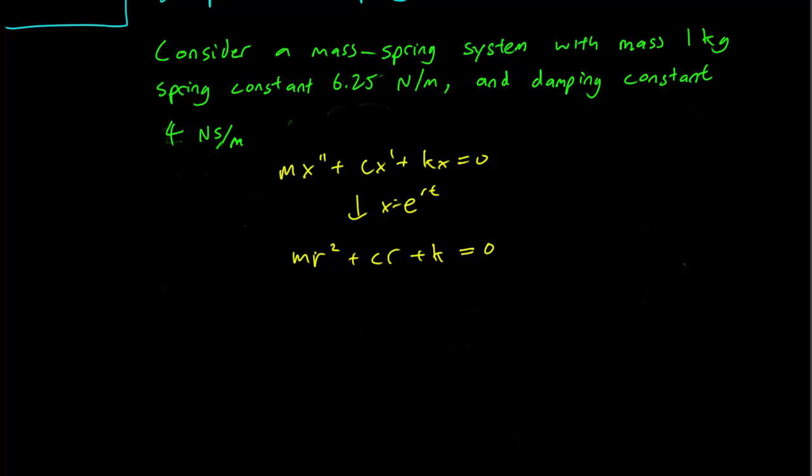So it's just a matter of looking at the discriminant c² - 4mk. In this case, c is 4, so 4² minus 4 times mass m = 1 times spring constant k = 6.25.